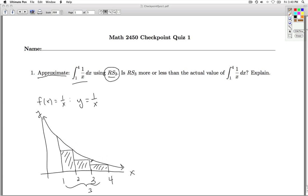Now, you'll notice that I'm missing some area under the curve, so this approximation is going to be a little less than the actual value of this definite integral. Okay, so let's actually compute RS3.